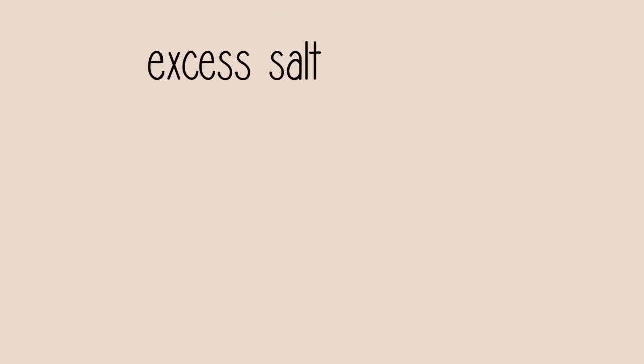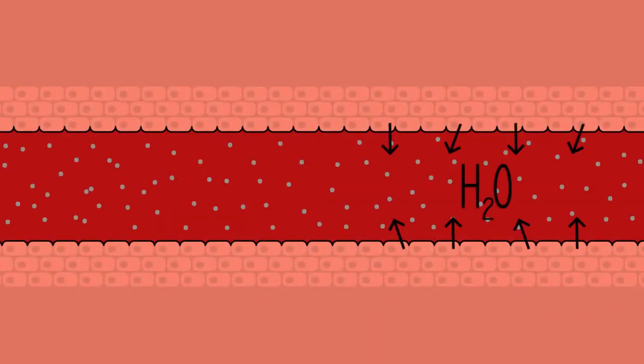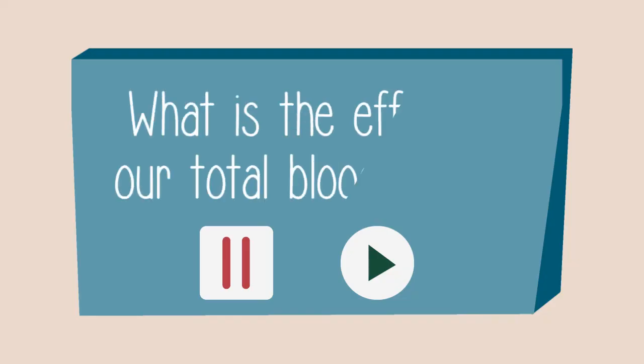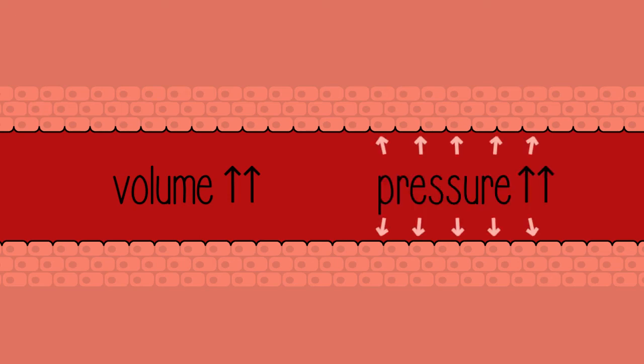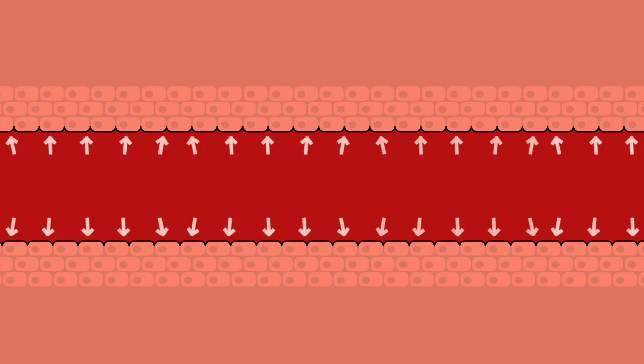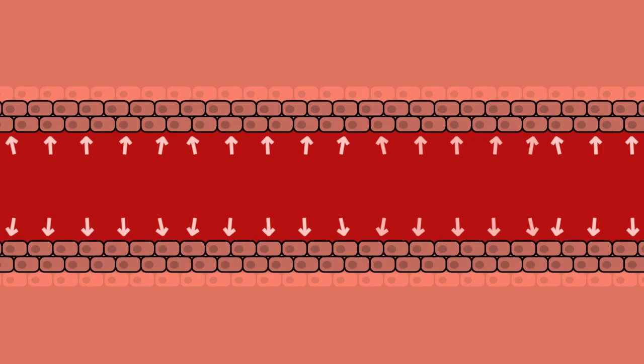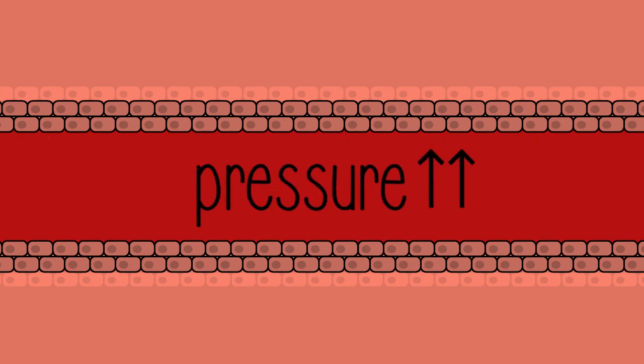This excess salt ends up in our bloodstream, causing water to be drawn out from our blood vessel cells through osmosis. What effect do you think this has on our total blood volume? Pause, think, and continue when ready. Blood volume increases, and this increases blood pressure because there simply isn't enough space for this extra volume. The blood vessel walls actually overcompensate by creating thicker and stronger cells to withstand this additional pressure, which further increases blood pressure.